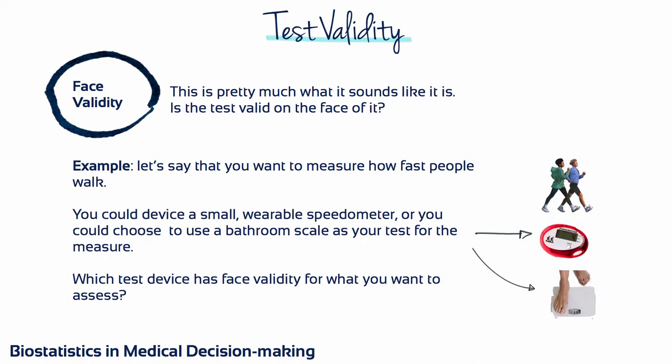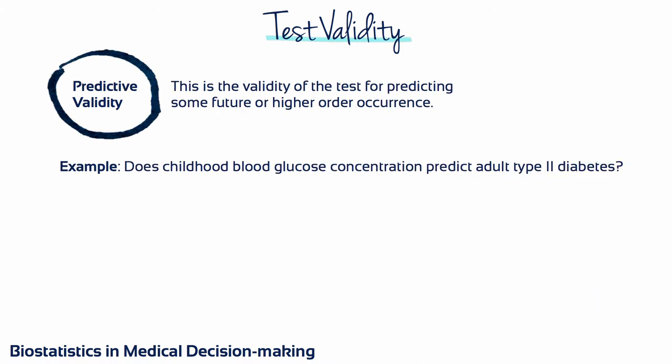To test walking speed, you could use a small wearable speedometer, or you could choose to use a bathroom scale. The speedometer is the more valid test — it has face validity for assessing walking speed. As another example, if you have a test for blood glucose and you measure blood glucose in a group of seven-year-olds, then wait to assess whether these children develop type 2 diabetes as adults, you are asking whether your childhood test for blood glucose predicts adult diabetes. If it does, your test has predictive validity.